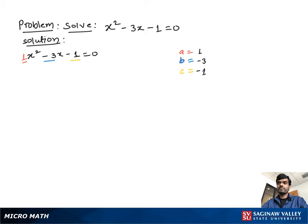So first we determine the value of a, b, c, which is a equal to 1, b is equal to negative 3, and c is equal to negative 1. Now using quadratic formula: x is equal to negative b plus minus square root b square minus 4ac over 2a.